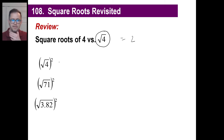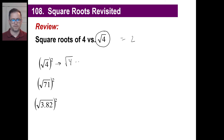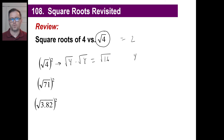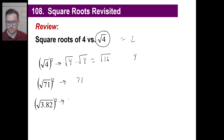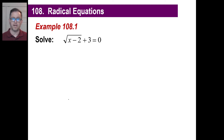You don't even have to think about these. If you had to take the square root of 4 squared, that would be the square root of 4 times the square root of 4, which is the same as the square root of 16, and the answer is 4. But you don't have to go through all that. If anything times itself under a radical is squared, it's just the number under the radical. For example, the square root of 71 squared is just 71, and the square root of 3.82 squared is just 3.82.